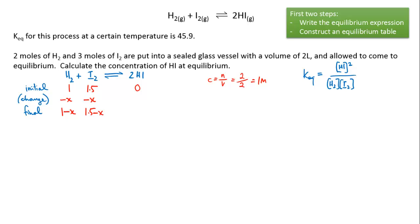It's a one-to-two ratio between hydrogen and hydrogen iodide, so if x moles of hydrogen is used then 2x moles of hydrogen iodide must have been made. So at equilibrium we have 2x hydrogen iodide.